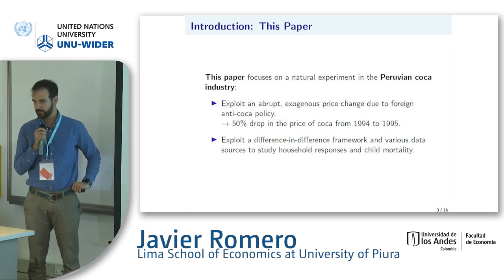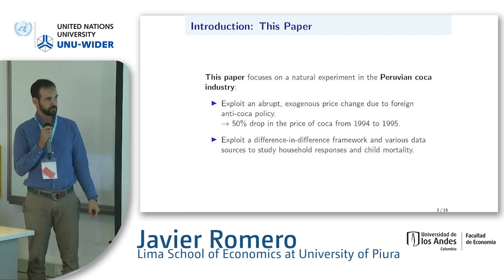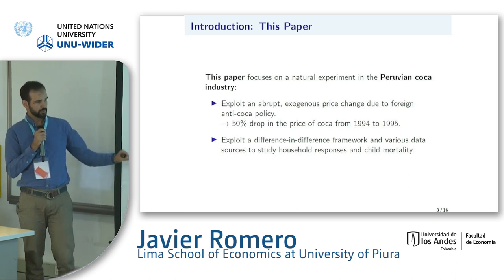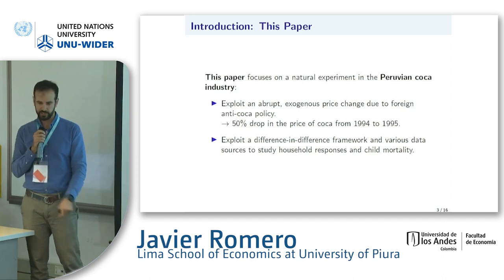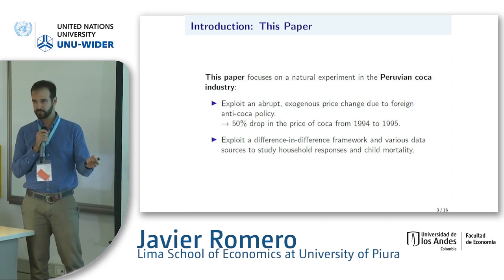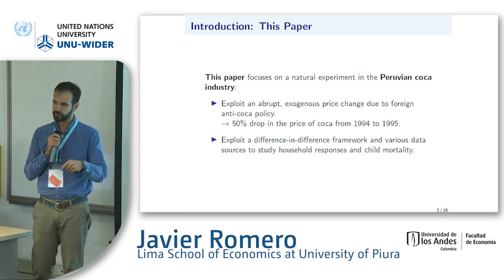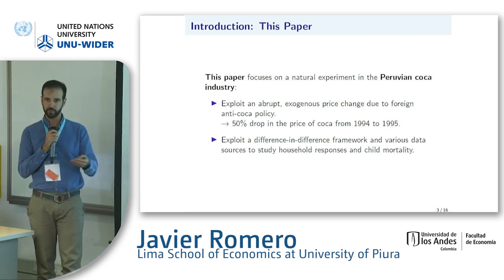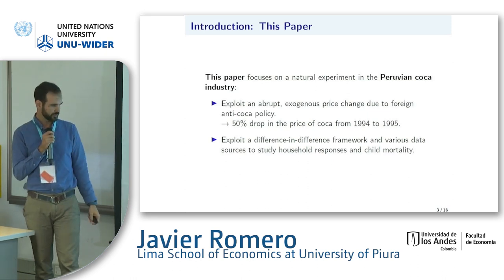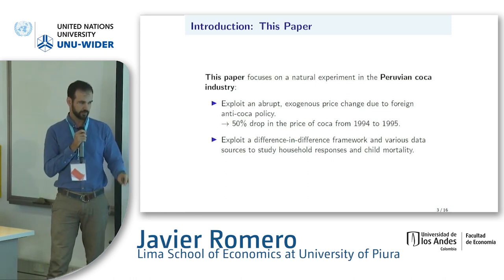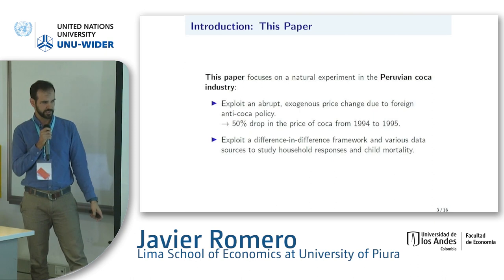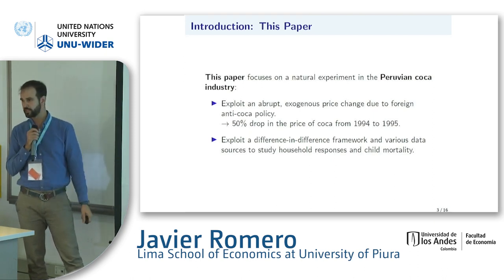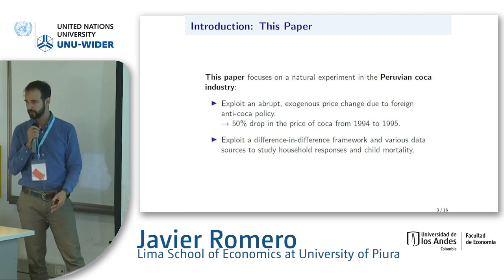What we do is exploit a natural experiment: the Peruvian coca industry. Coca is the main input for the production of cocaine. We exploit an abrupt price change — a price drop that came because of some foreign policy I will explain later. It represented about a 50% drop in price for the producers of the coca leaf. From one year to the next, they were seeing 50% less on farm gate prices. We use variation across space in coca cultivation and variation over time of this abrupt decline to pin down what is happening with child mortality and the behavioral responses of households.